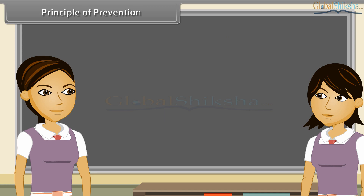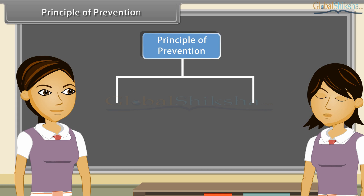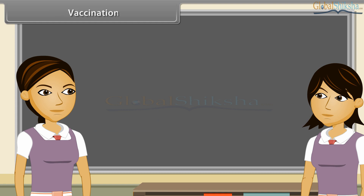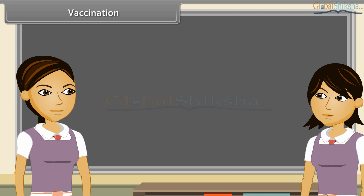Similarly, there are two broad methods of prevention of disease: general ways and specific ways. I have been vaccinated for measles, mumps, and rubella. What is vaccination?